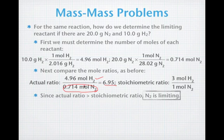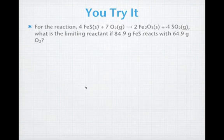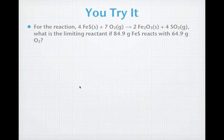Are you ready to try it on your own? All right. So now you're going to try this on your own. For the reaction, we have 4 iron 2 sulfides and 7 oxygen gas are producing 2 iron 3 oxides and 4 sulfur dioxides. By the way, what kind of a reaction does this look like? What is the limiting reactant if we have 84.9 grams of the iron 2 sulfide reacting with 64.9 grams of oxygen?